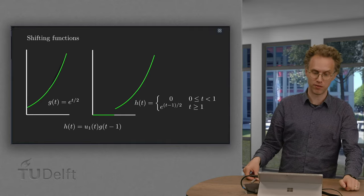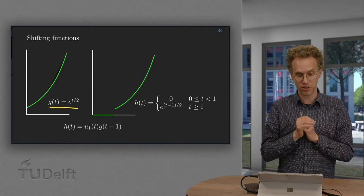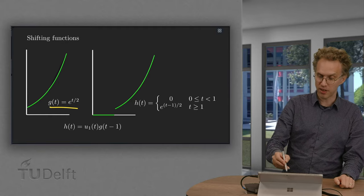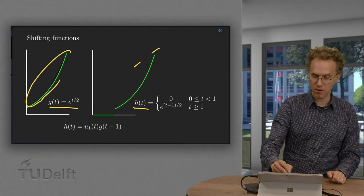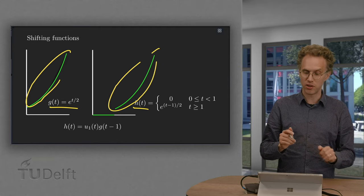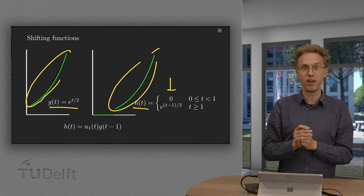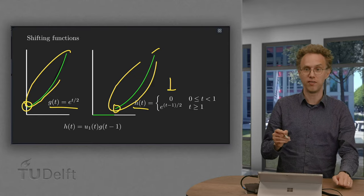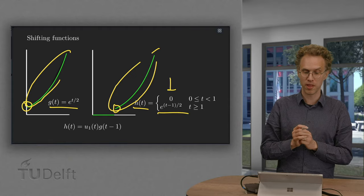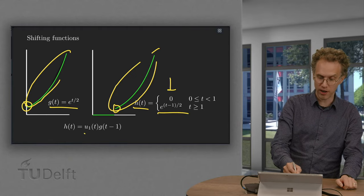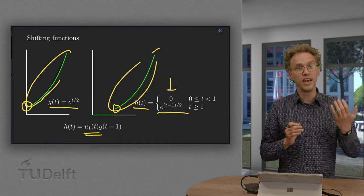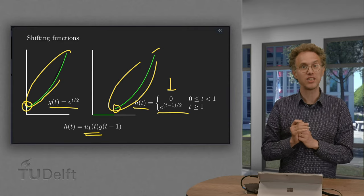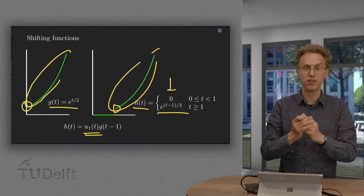We will start with shifting functions. We need to take some g(t) = e^(t/2), and then we shift this function entirely one step to the right to get h(t), which is this same function but now shifted one unit to the right. So h(t) starts as 0, and then at t equals 1, we start with our e power, but we start at this value over here. So effectively, if you write as a function, you get e^((t-1)/2). We can use our u1, our step function, to write down h(t). h(t) equals u1(t) times g(t-1). So that is how we can use our step function to write our shifted functions.